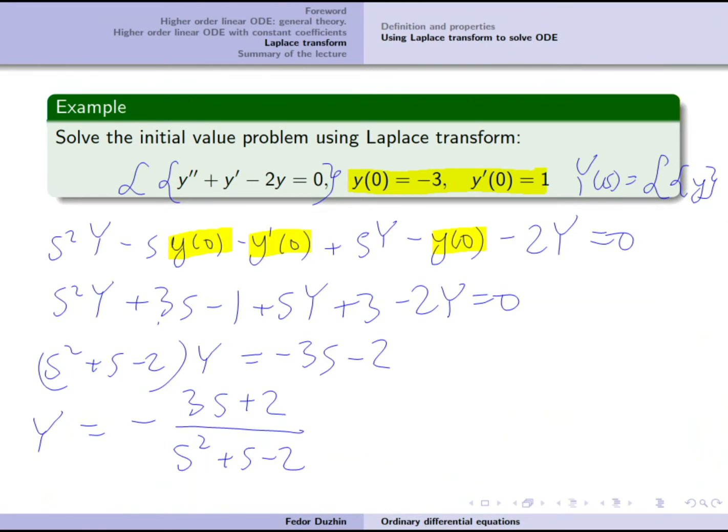What we did here is immediately calculate the Laplace transform of the unknown function. To recover the function itself, we need to apply partial fractions. I've done it in Wolfram Alpha: this is minus 4/3 times 1/(s + 2) minus 5/3 times 1/(s − 1).